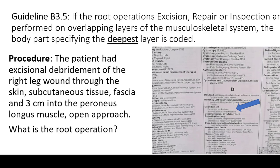Guideline B3.5 says if the root operations excision, repair, or inspection are performed on overlapping layers of the musculoskeletal system, the body part specifying the deepest layer is coded. An example procedure: excisional debridement of a right leg wound through the skin, subcutaneous tissue, fascia, and three centimeters into the peroneus longus muscle, open approach. The root operation is excision because you're taking out part of that muscle. A hint in the index: look under debridement and you'll see excisional debridement and non-excisional debridement. If it's excisional, excision is your root operation. If it's non-excisional, extraction would be — such as when you use suction to remove something.